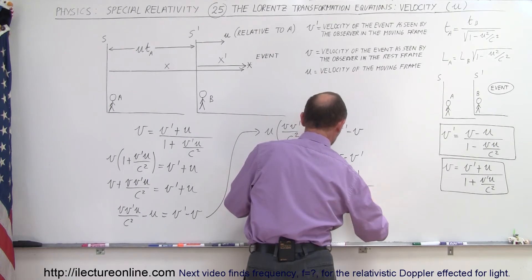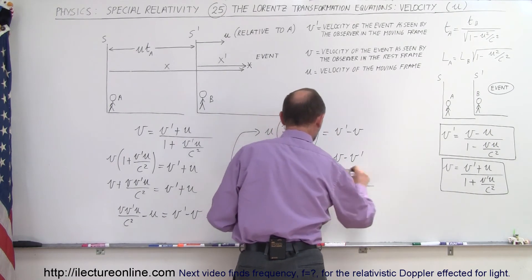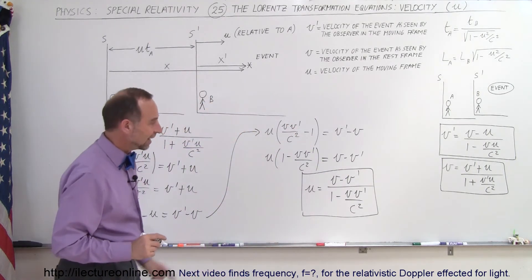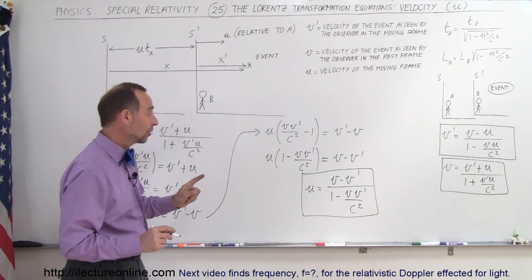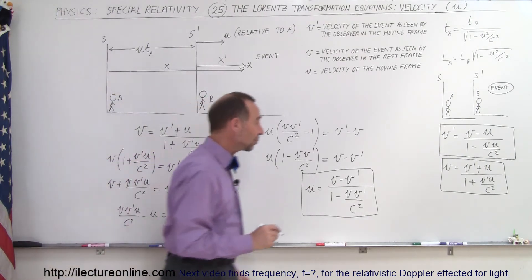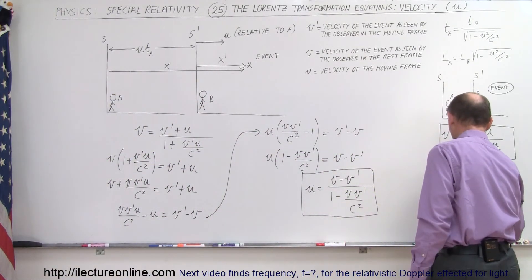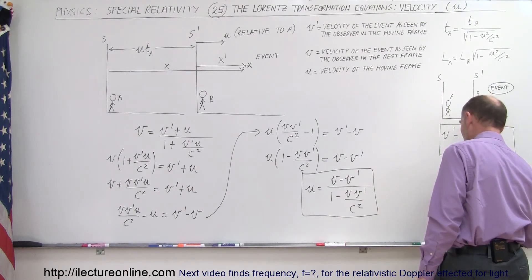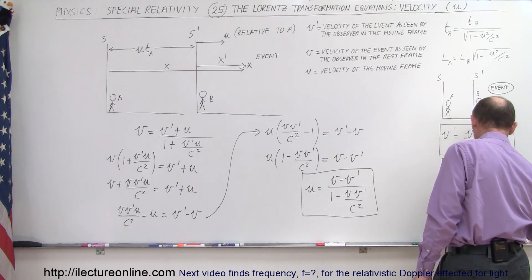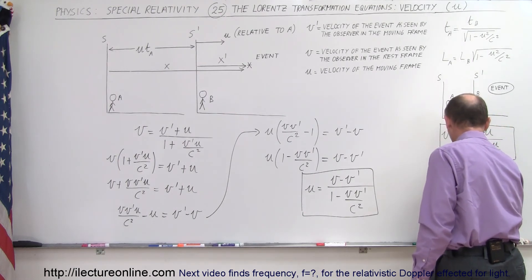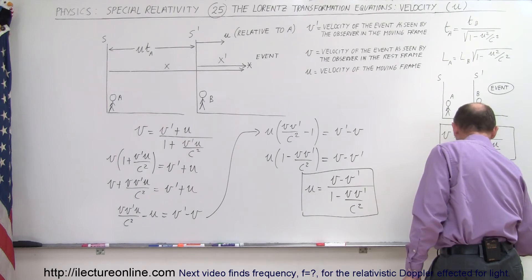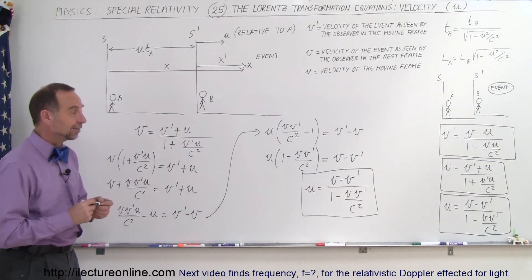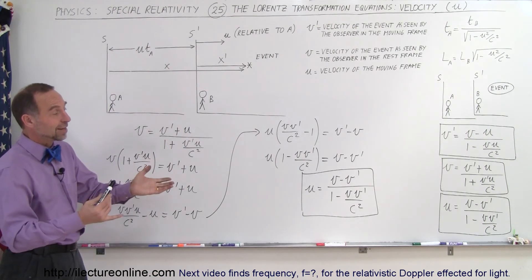And there is the third velocity equation obtained using the Lorentz transformation equations: u = (v − v′) / (1 − vv′/c²). Now you have all three equations, so you can figure out the velocity of any item.